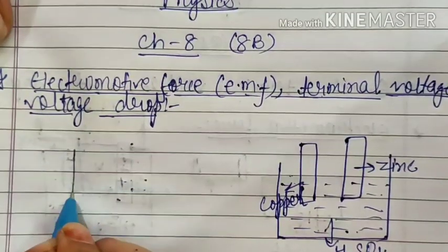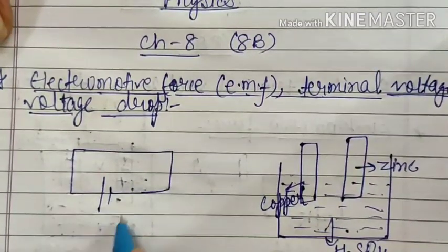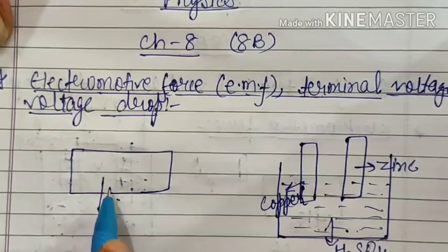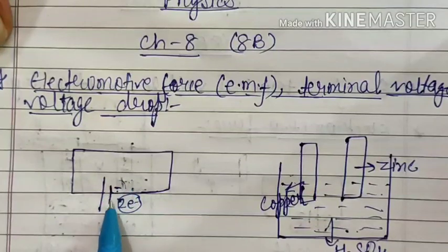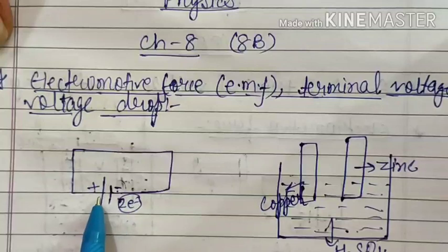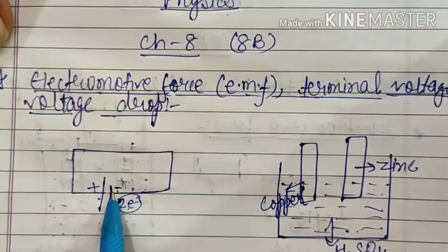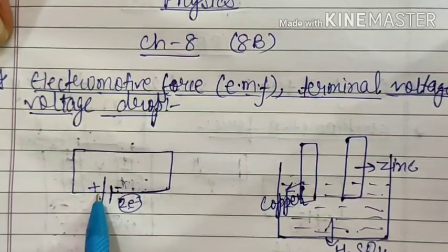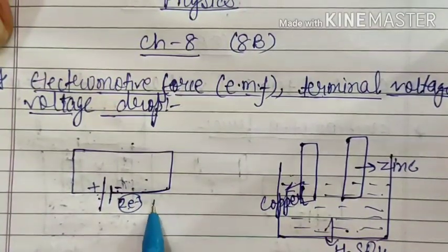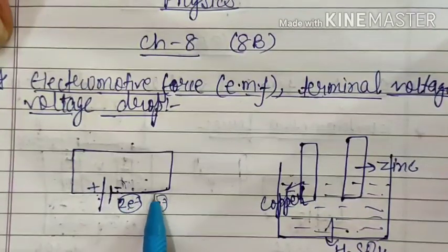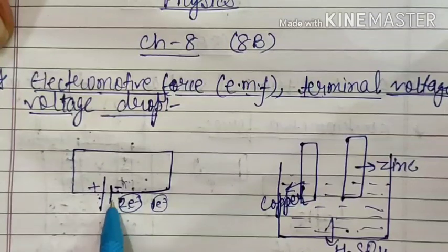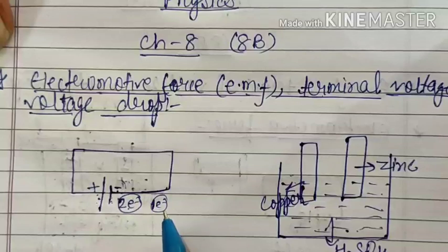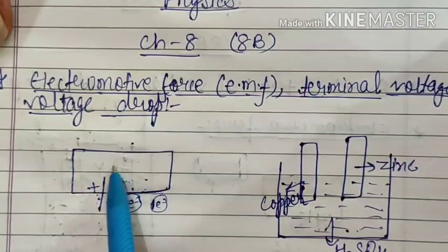We know that for a continuous flow of current we need a constant potential difference. The negative terminal has excess electrons and the positive terminal has a deficiency of electrons. Electrons will move from the negative to the positive terminal, and once the concentration equalizes, the flow of electrons stops and hence there is no current. So we need a continuous difference in the concentration of positive and negative ions to maintain a constant current.